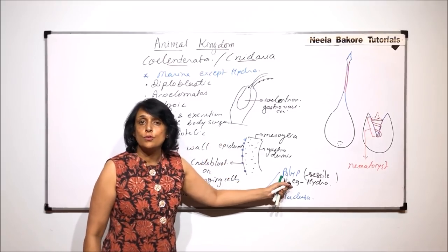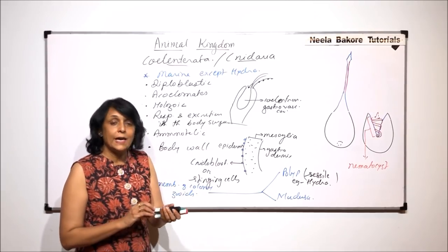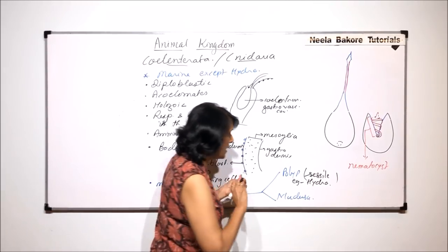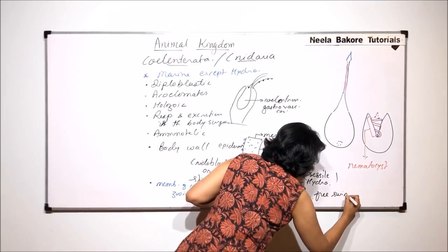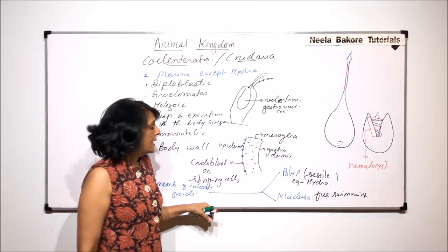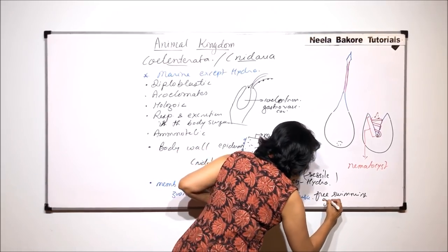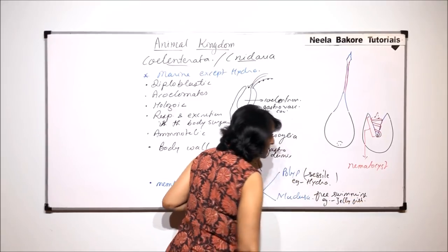The second is the medusa type and these are free swimming. And the shape is umbrella-like. Here we can take the example of jellyfish, that is Aurelia.